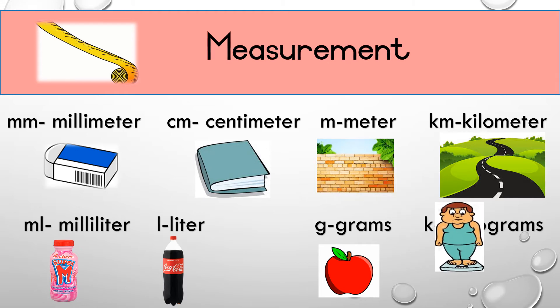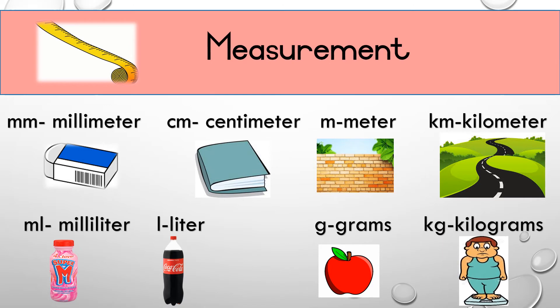Then we have KG for kilograms. We use that to measure something that is a little bigger and that weighs more, like a person. For example, you weigh 23 kilograms.